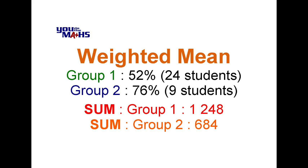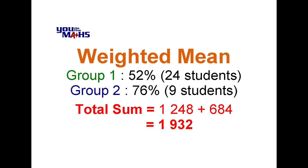All we need to do now is add up those two separate sums to come up with a total sum for all the scores, which in this case is 1932. So that's the sum of all the scores.